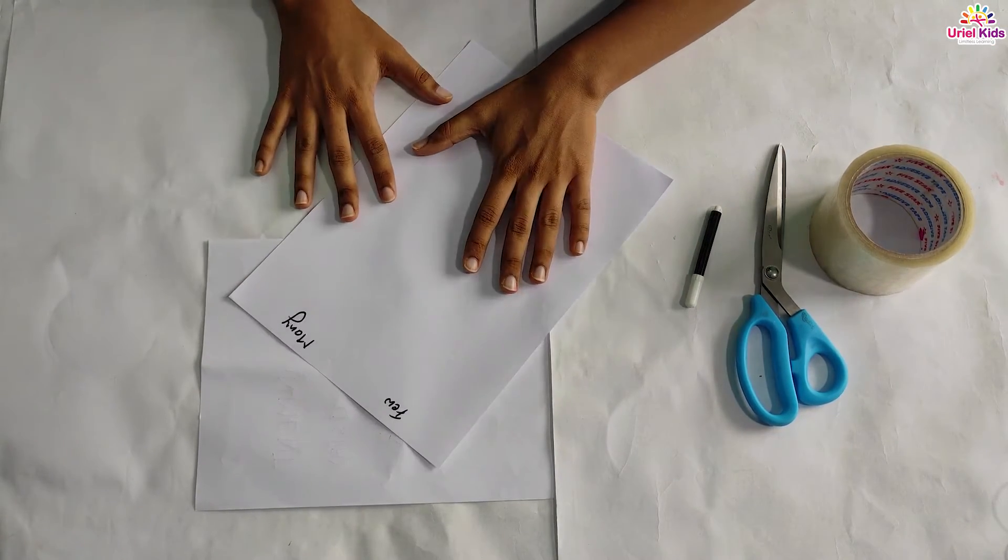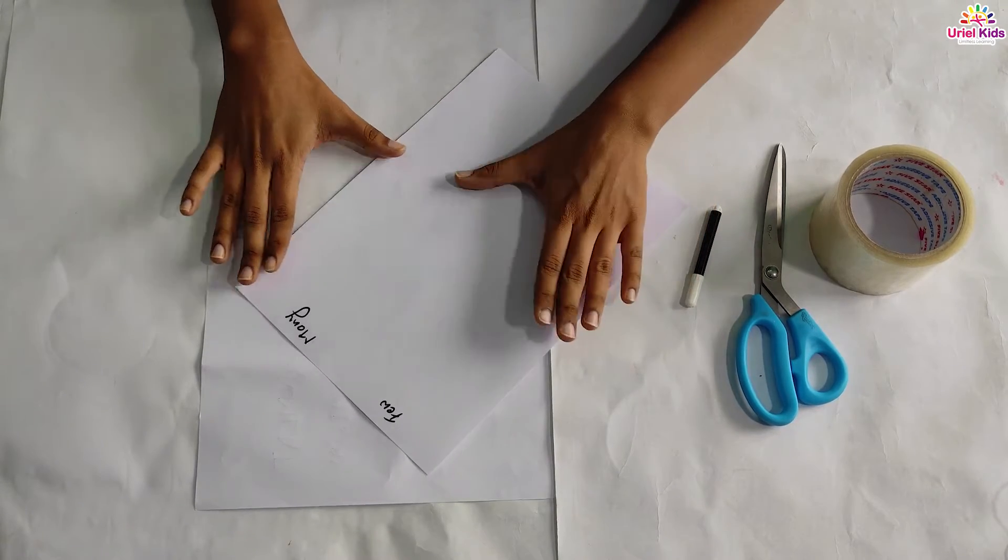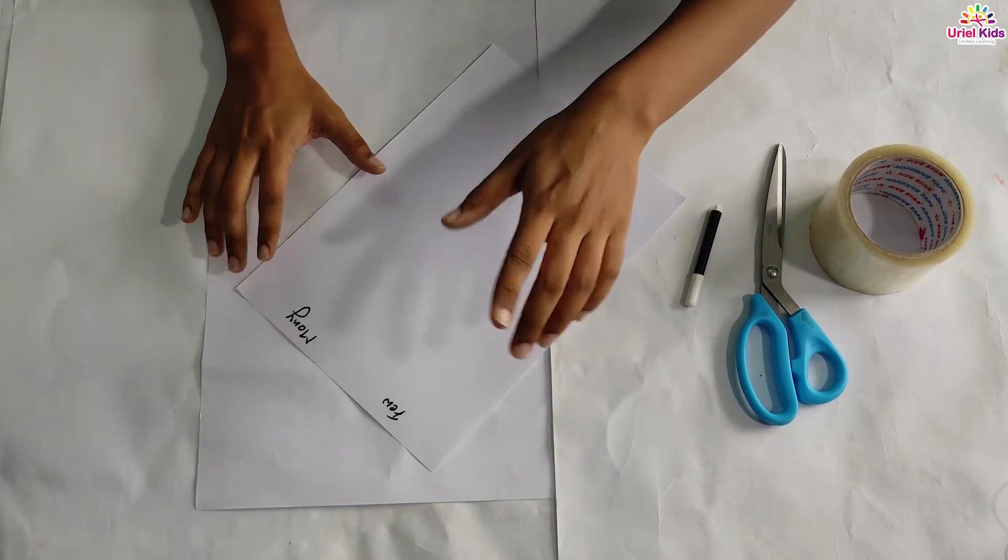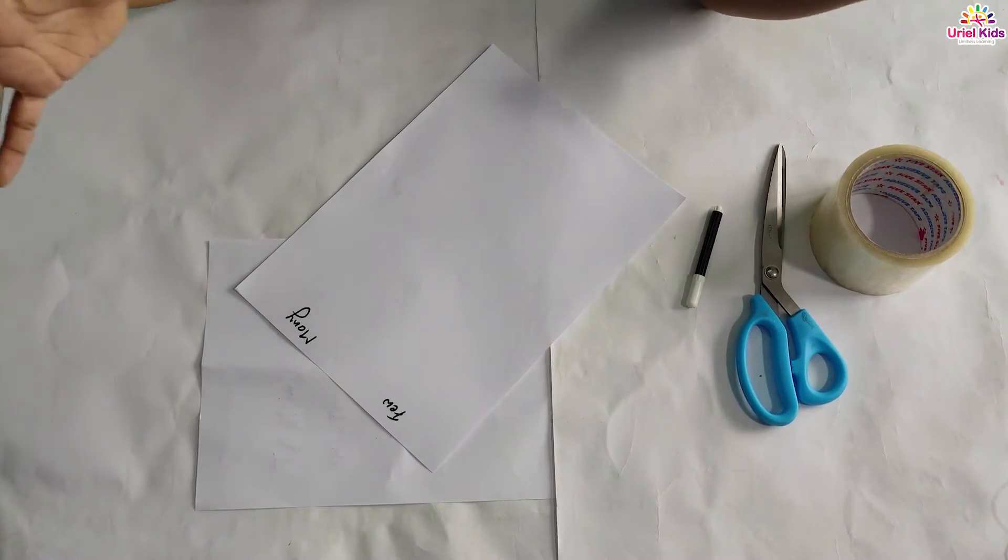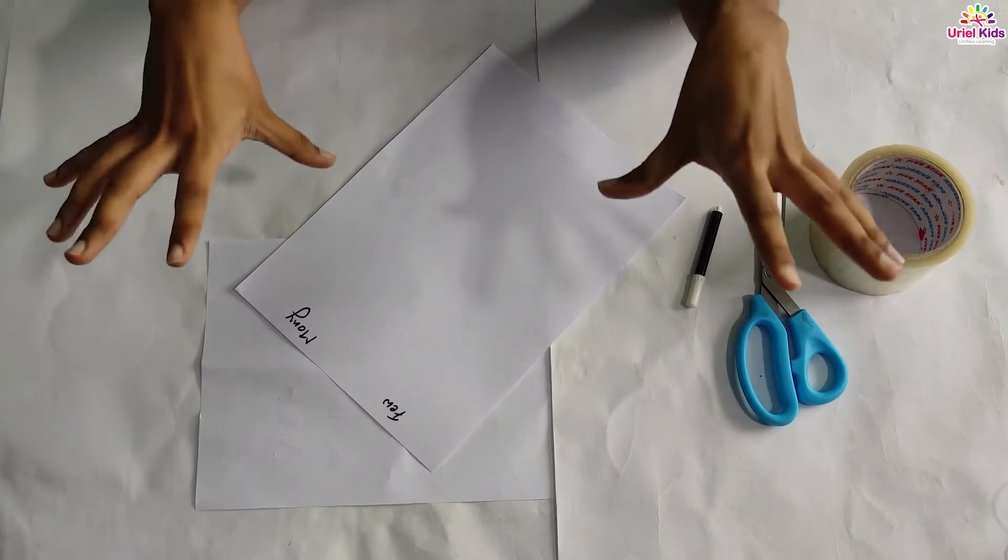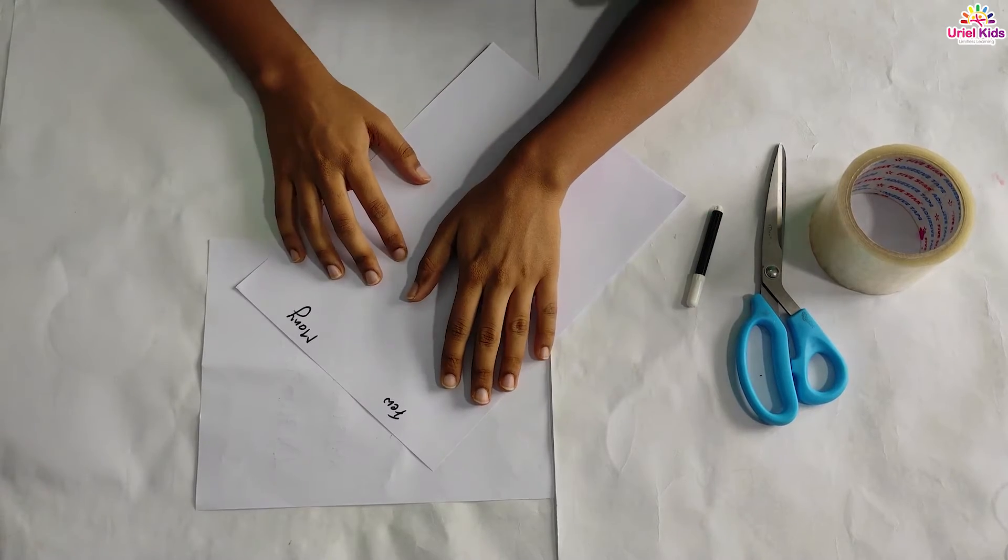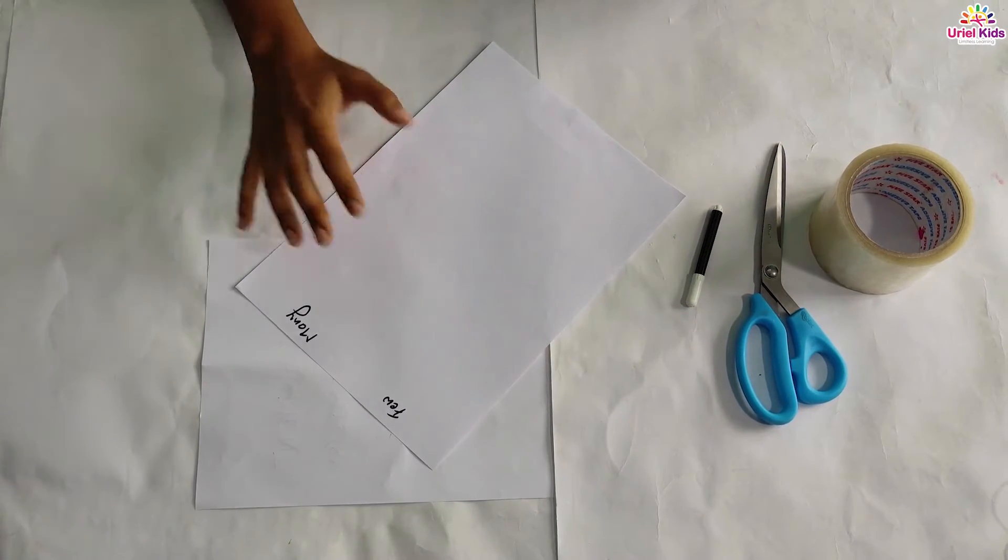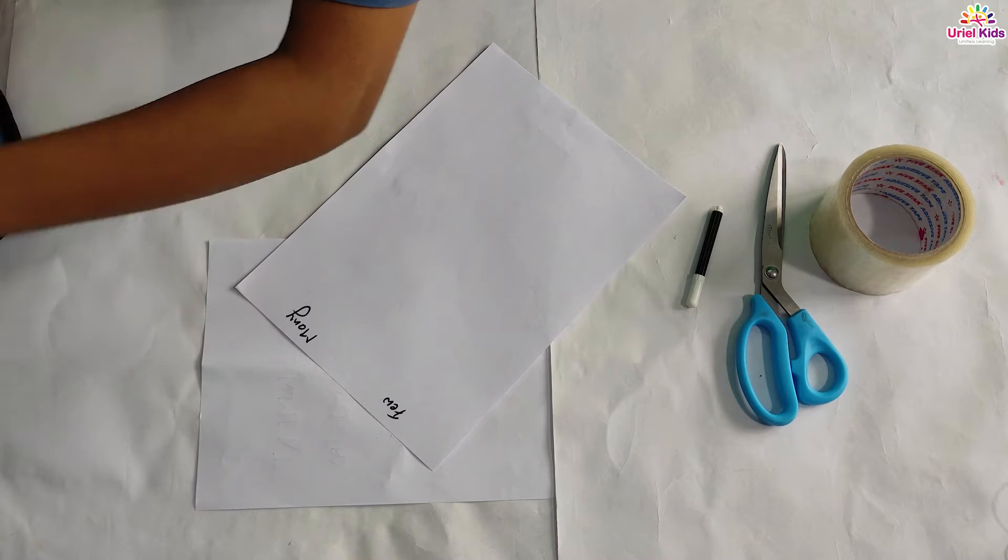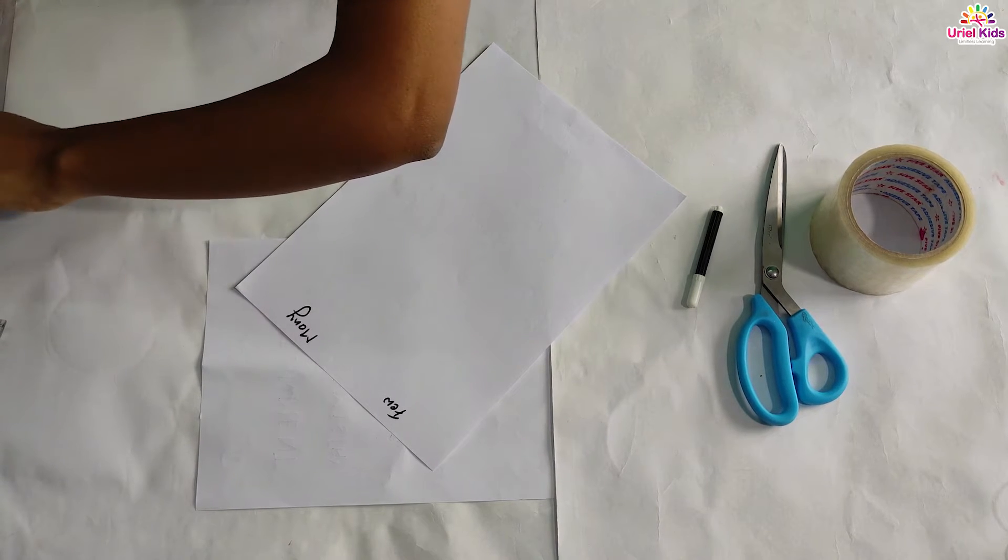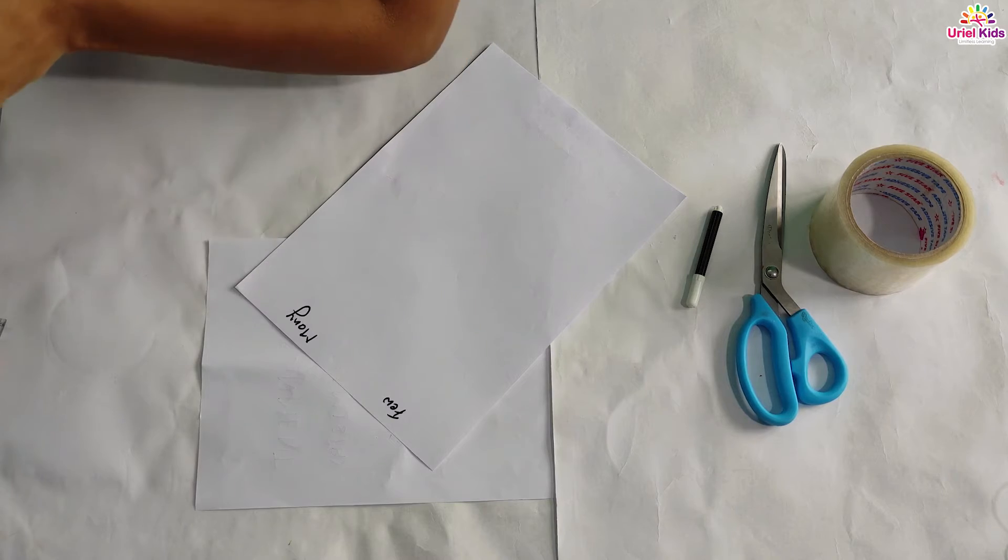So you have to take a paper like this, an A4 sheet, where you can write few and many. And then you can take the items that are available in your home that are small in size. And you have to stick them in the few column and in the many column, some of them, so that the child will have a clear understanding about few and many.